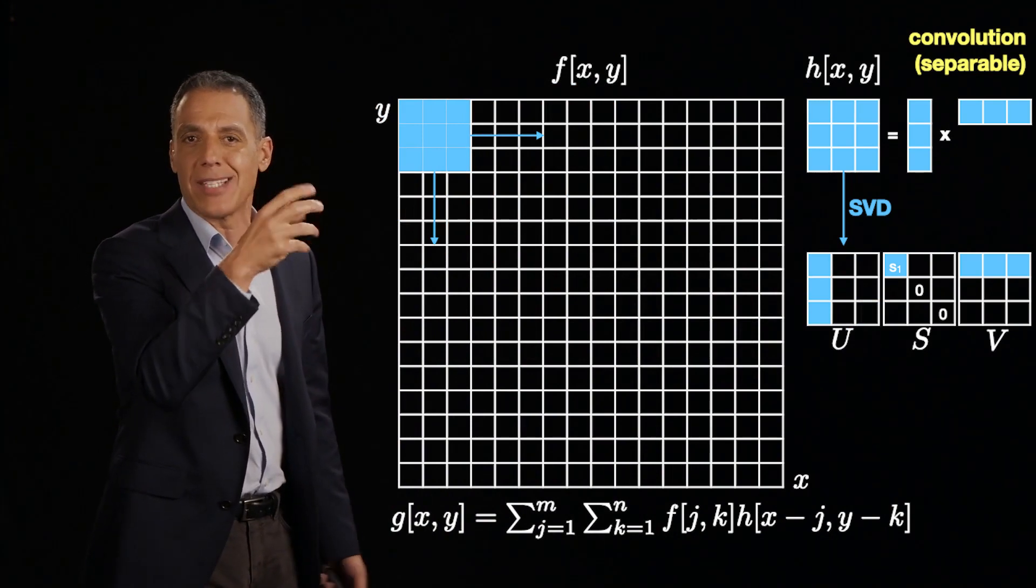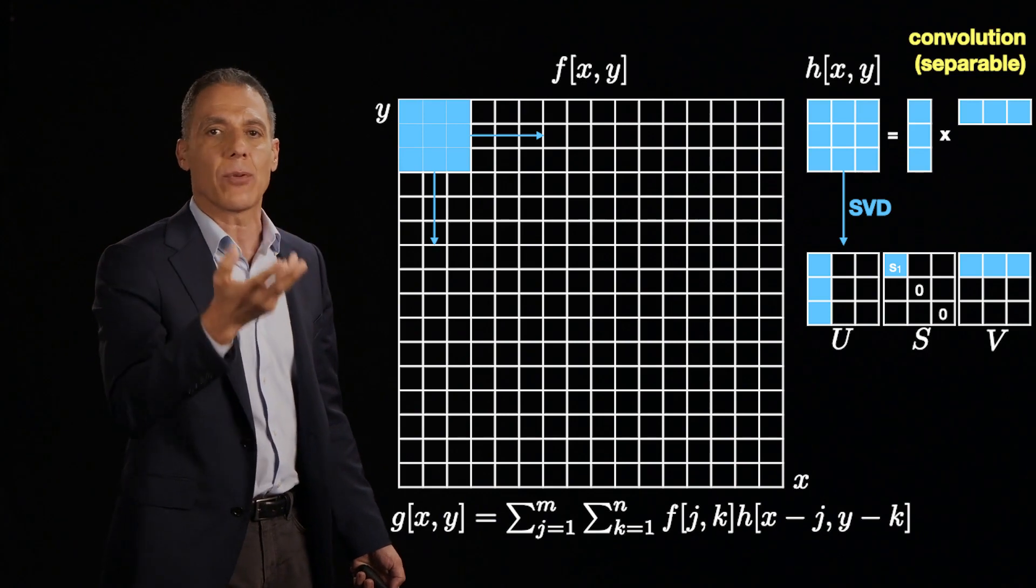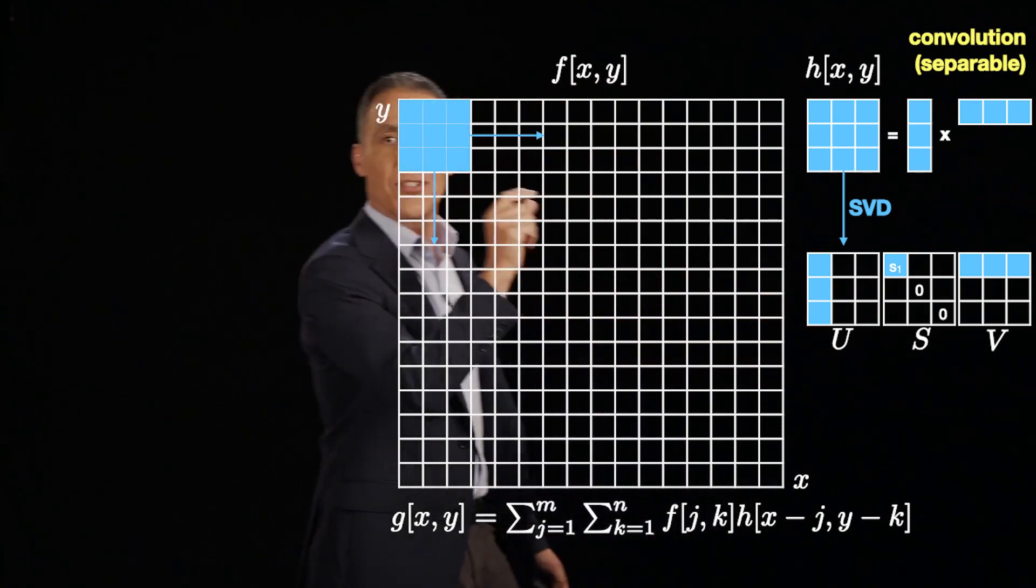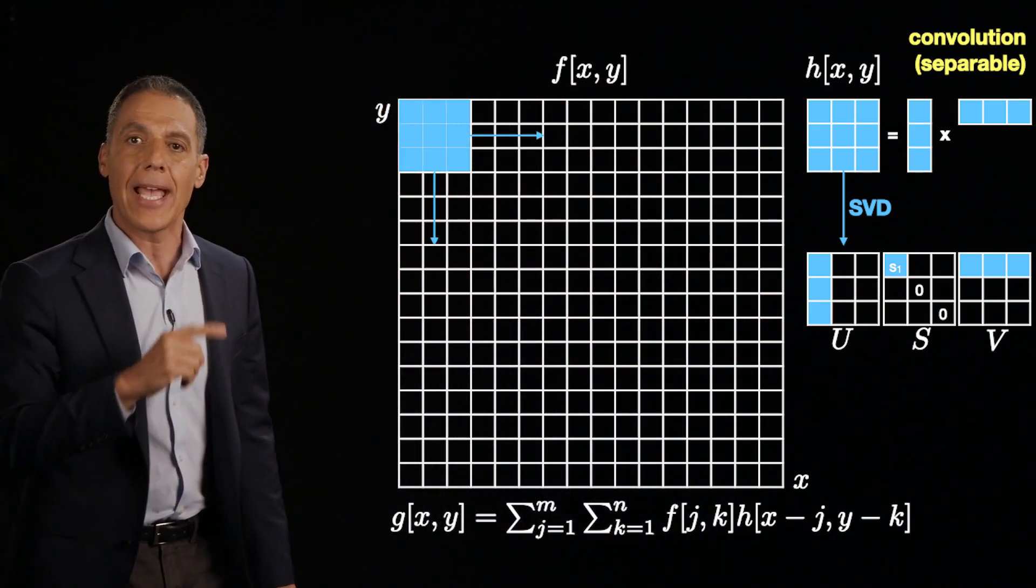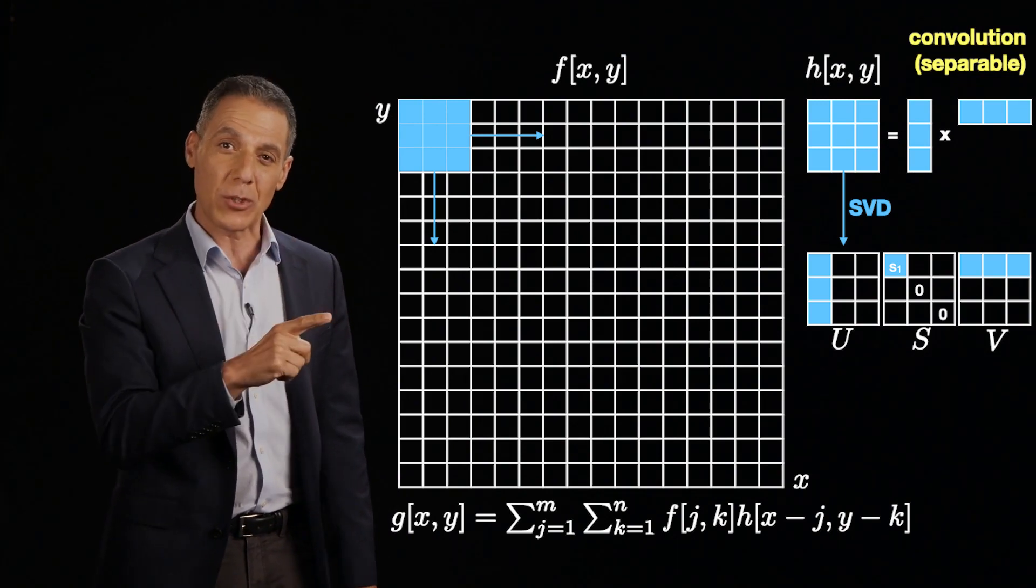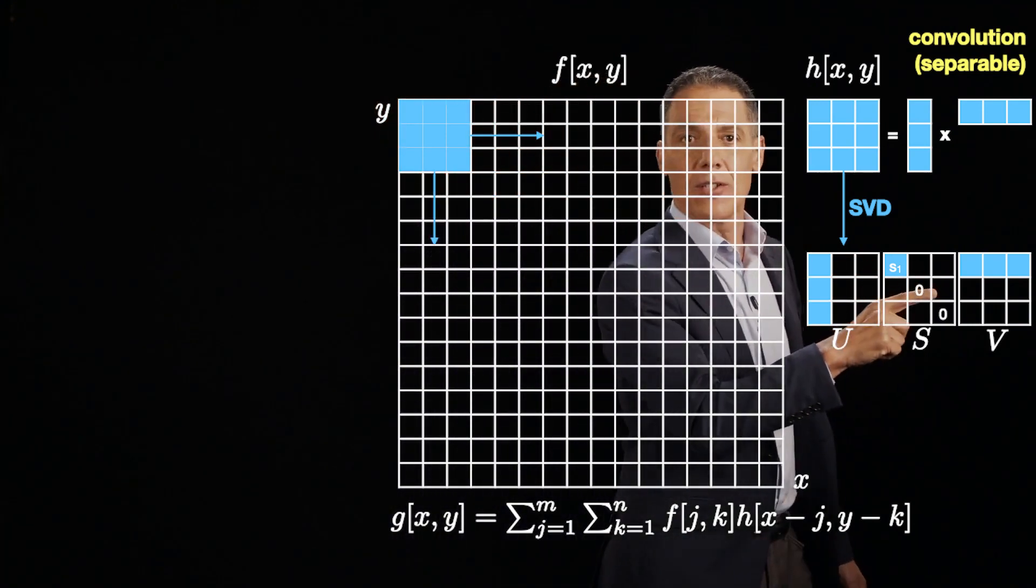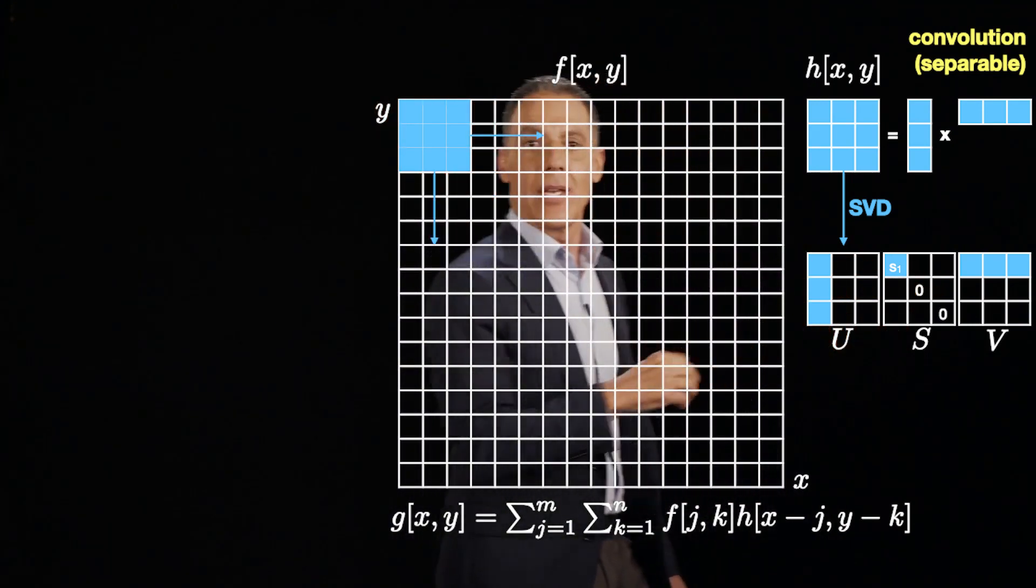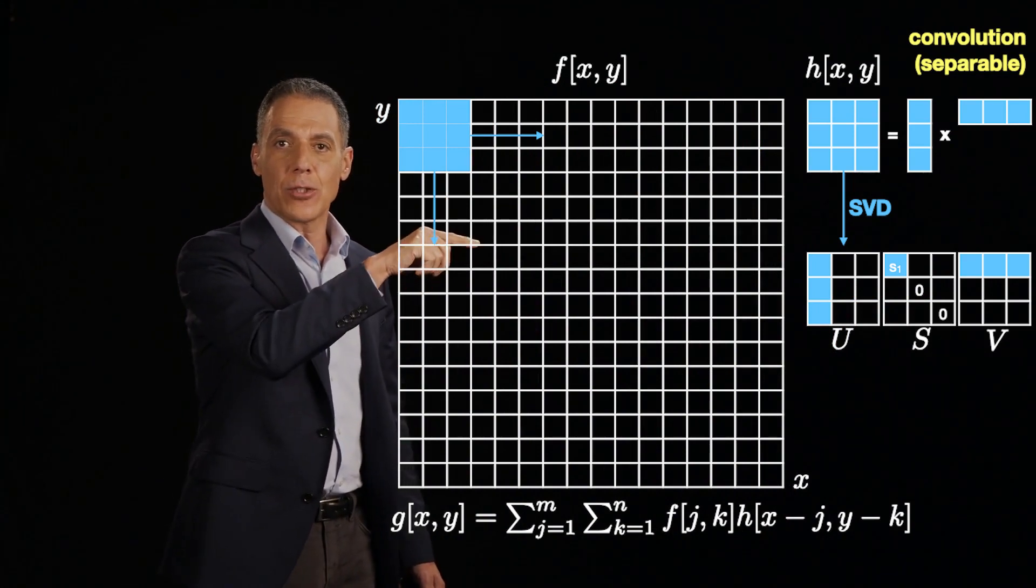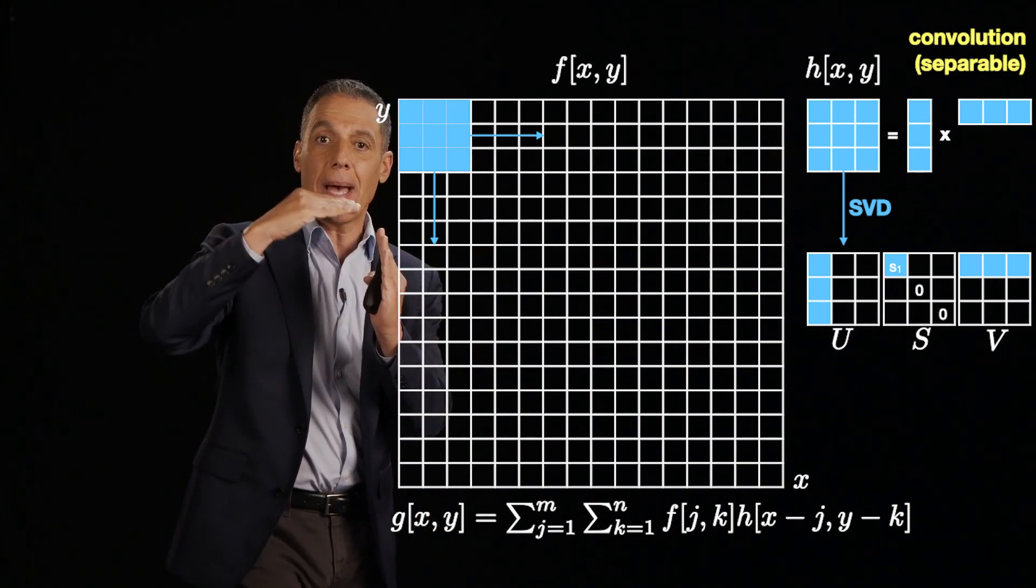And it's going to be true when you do a singular value decomposition on your kernel. So take that kernel response. Now it's just a matrix, 3 by 3, 5 by 5, 7 by 7, I don't care. And do a singular value decomposition, which will tell you what the singular values of that matrix are. And if that kernel response corresponds to a matrix that is rank deficient, then all but one of the singular values will be zero. And what that means is that the first column